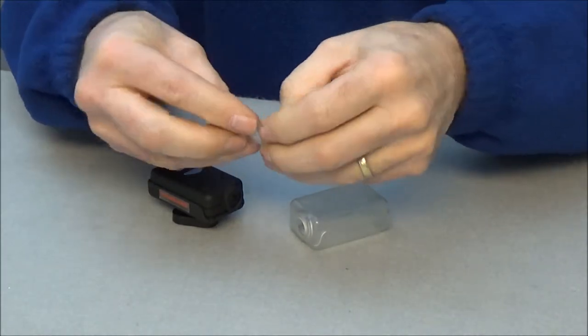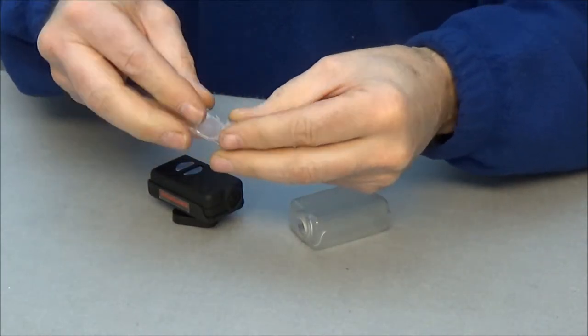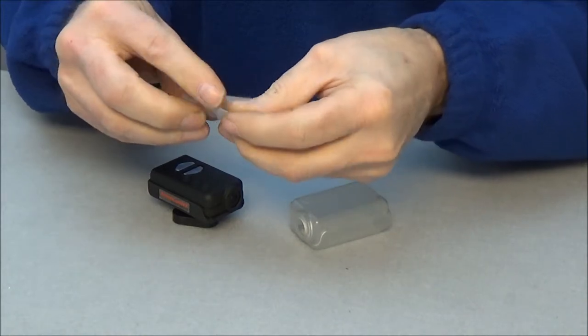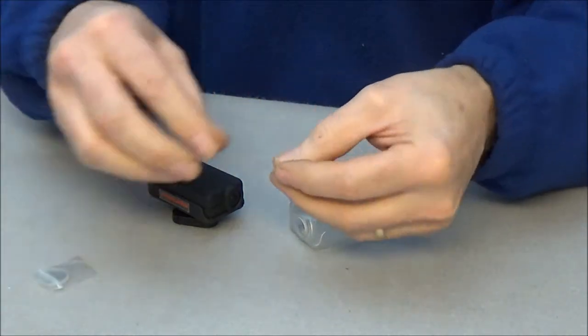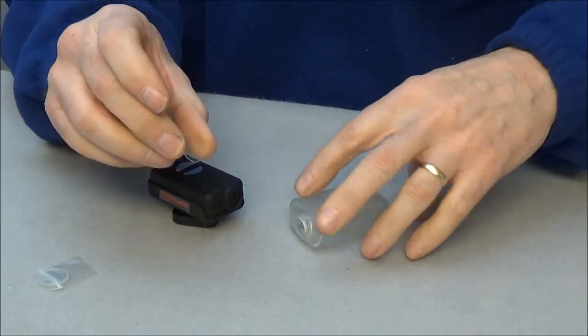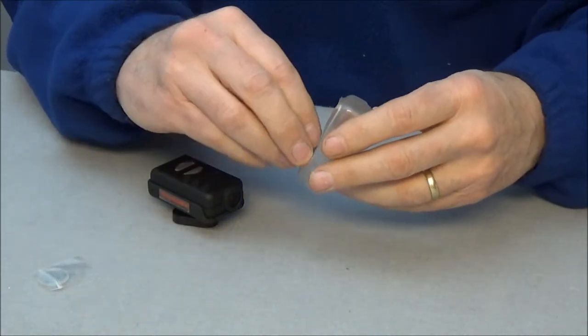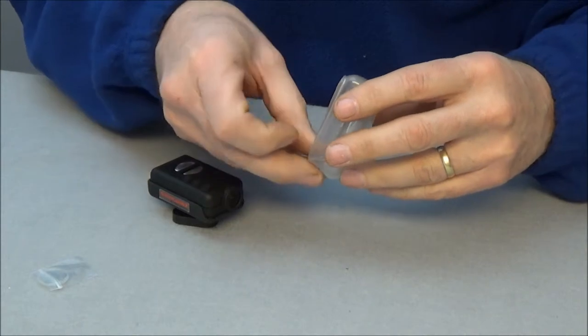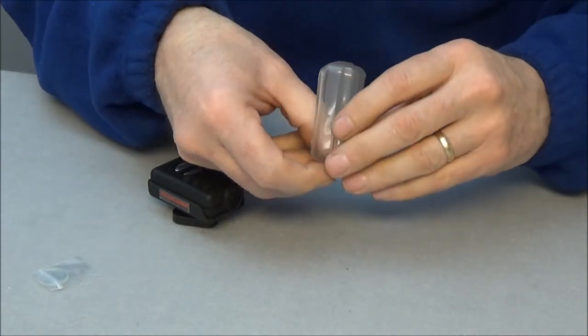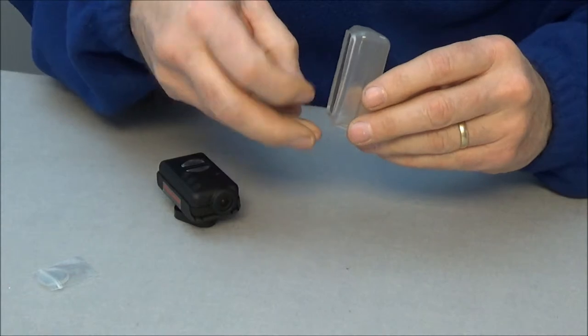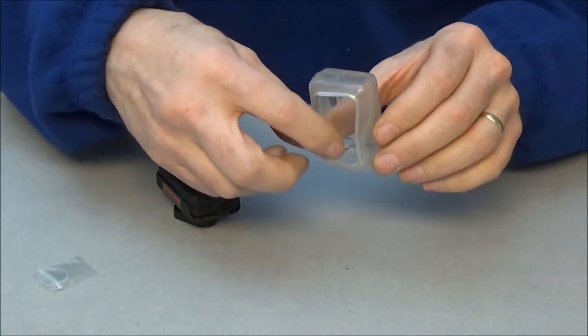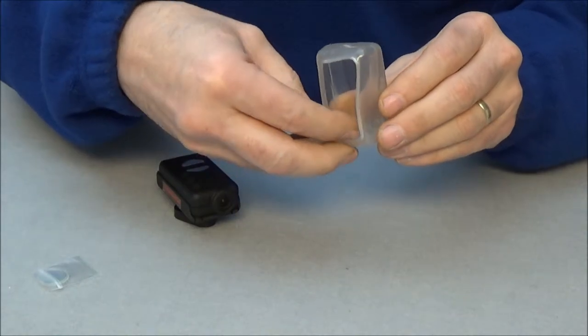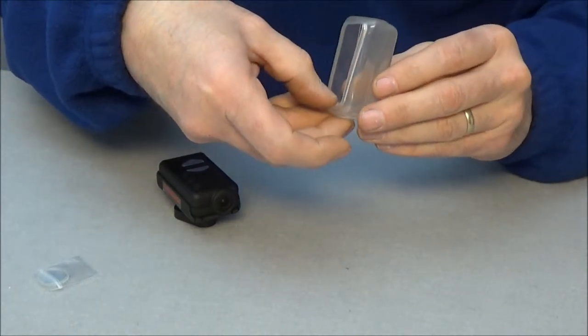If you're going to use the replaceable window inside the cover, simply take one of the windows from the package—a small disk, small plastic diameter—and drop it into the recess inside the weather cover. There's a recess right there where the lens for the camera will fit into.